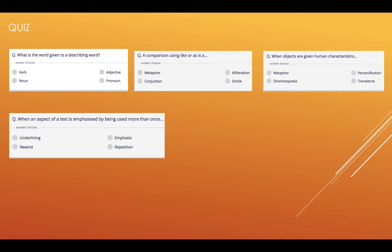Number four, when an aspect of a text is emphasized by being used more than once, in other words repeated, it is called underlining, emphasis, rewind or repetition. If you choose rewind, write R-E-W, and if it's repetition, write R-E-P, otherwise just write the first letter of the other words.